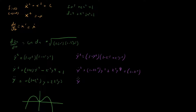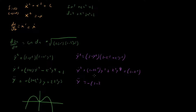Taking another derivative gives us the Newton's second law type equation for cn: y-double-dot equals −(1 − 2k²)y − 2k² y³.